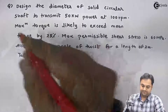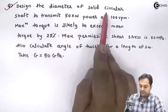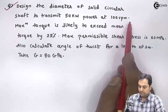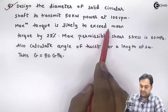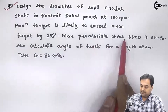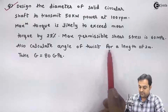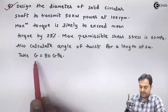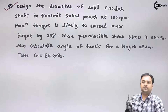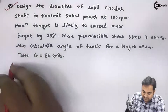Let us take the next question. It is given: design the diameter of a solid circular shaft to transmit 50 kilowatts power at 100 rpm. Maximum torque is likely to exceed mean torque by 25 percent. Maximum permissible shear stress is 60 megapascals. Also calculate the angle of twist for a length of 2 meters. Take G as 80 GPa. I will write the given data first.